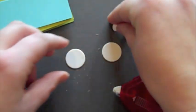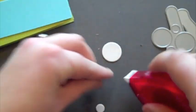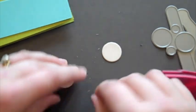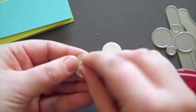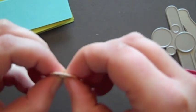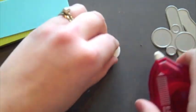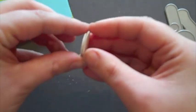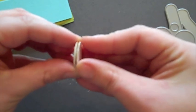Sandwich those together like that, and then I'm going to adhere these small circles to the back of the large circles. So essentially I'm going to end up with this sandwiched in here like this.